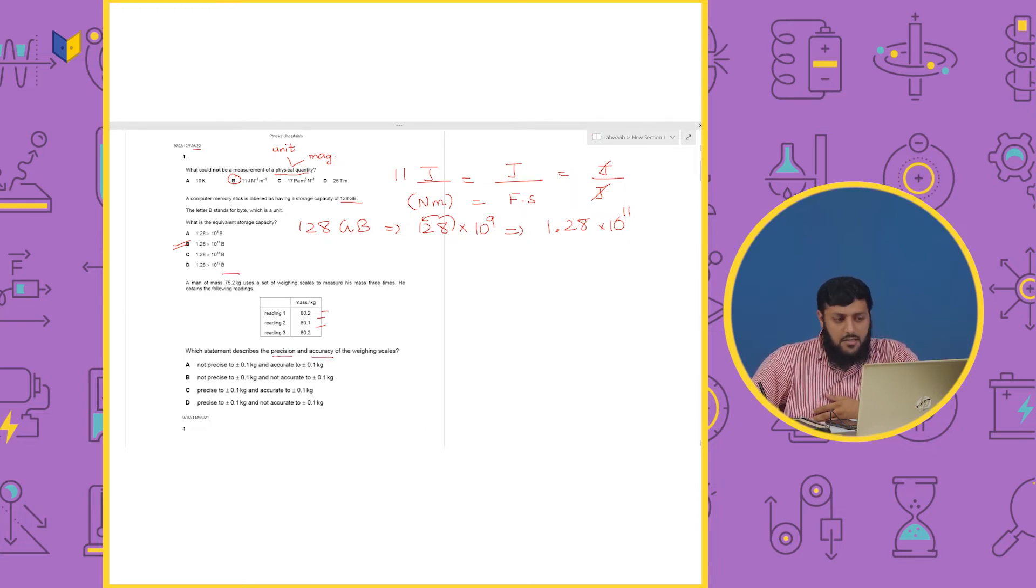Which statement describes the precision and accuracy of the weighing scales? So, we can see this easily in the given question. We have almost looked at the precision of the three times. So, we have almost looked at 80.1, 80.2, 80.2. So, there is no difference between close measurements.